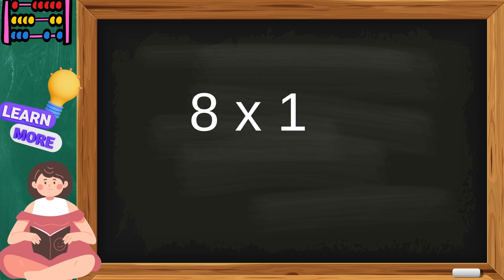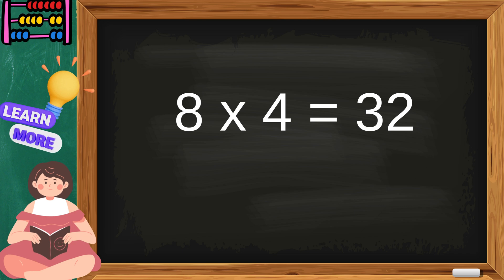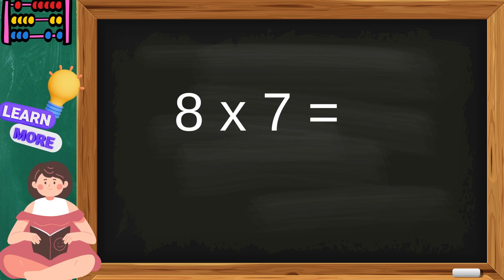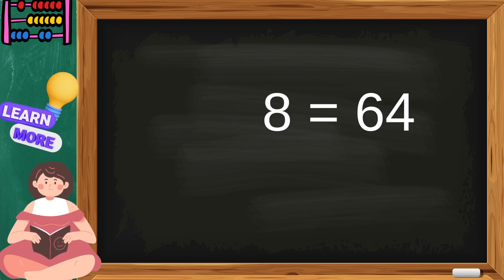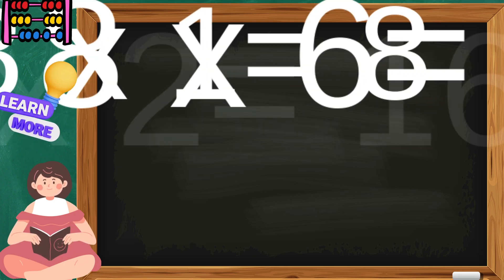Eight ones are eight, eight twos are sixteen, eight threes are twenty-four, eight fours are thirty-two, eight fives are forty, eight sixes are forty-eight, eight sevens are fifty-six, eight eights are sixty-four, eight nines are seventy-two, eight tens are eighty.